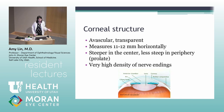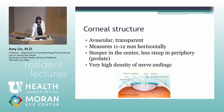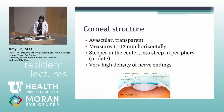Cornea is an avascular transparent tissue that measures about 11 to 12 millimeters horizontally, and it has a prolate configuration, where it is steeper in the center part of the cornea and less steep in the periphery. If a cornea has undergone myopic corneal refractive surgery, it will become flatter in the center or steeper in the periphery, and that's termed an oblate cornea. The cornea has a very high density of nerve endings, which is why any injury is very, very painful.